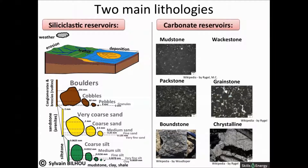Carbonate rocks are composed of various carbonate minerals — calcite or aragonite and dolostone — precipitated by a variety of organic and inorganic processes. Unlike siliciclastic rocks, carbonates are classified according to their textures. Mudstones are composed of less than 10% grain and more than 90% mud. Packstones and grainstones are grain-supported, with grainstones containing no mud. Boundstones are grain-supported, but the grains were linked during the deposition phase — they are generally bioconstructed. Crystalline carbonates were recrystallized after deposition, and no depositional features are visible.